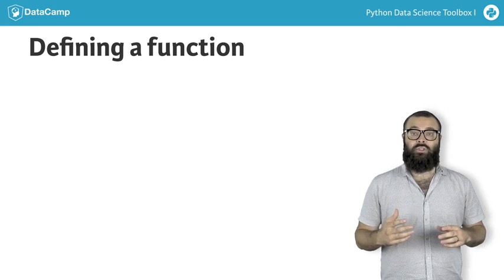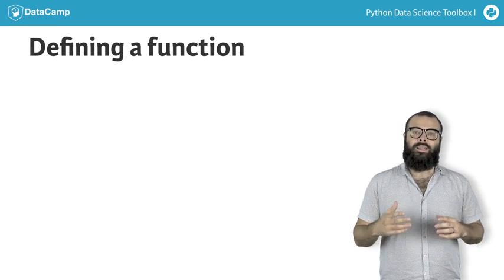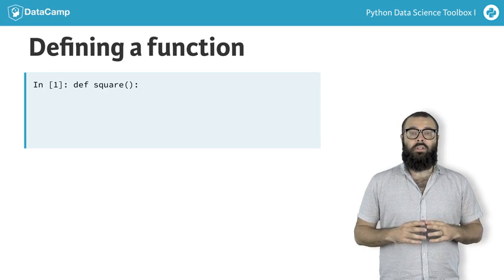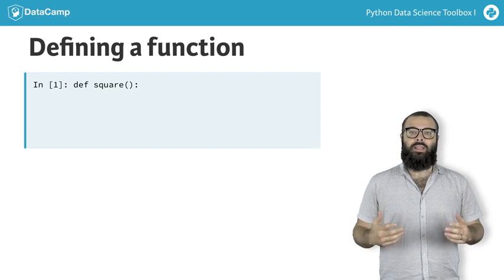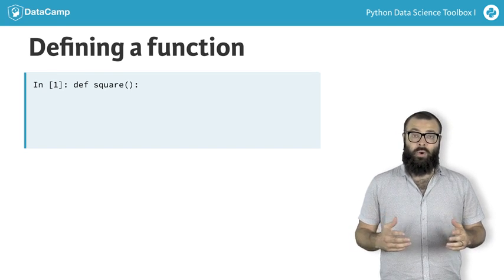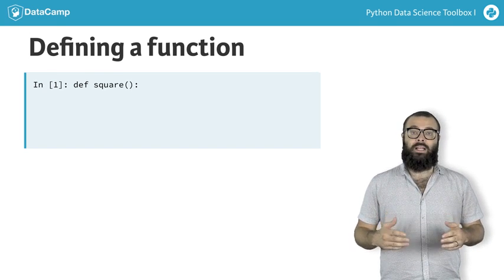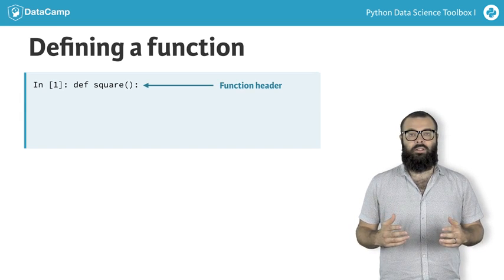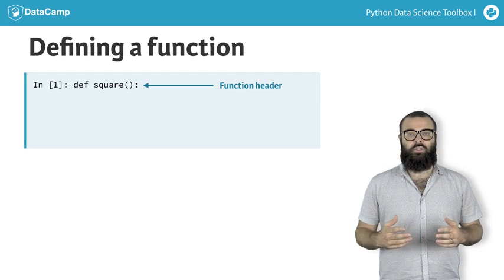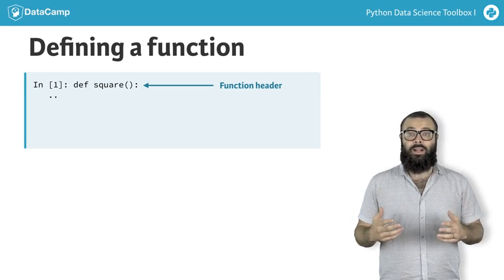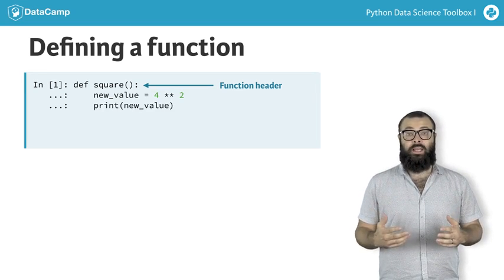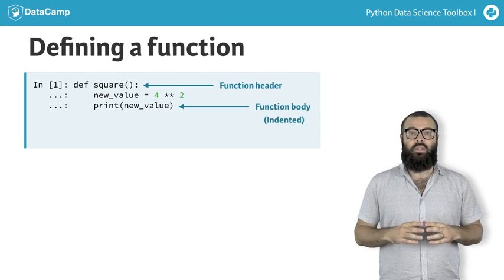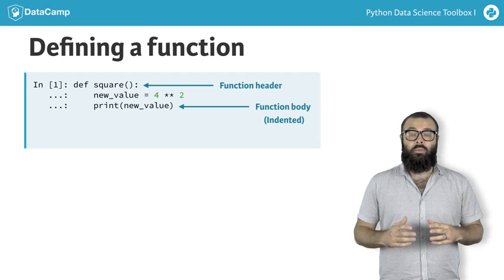We'll now see how to define functions via an example, a function that squares a number. The function name square will be perfect for this. To define the function, we begin with the keyword def, followed by the function name square. This is then followed by a set of parentheses and a colon. This piece of code is called a function header. To complete the function definition, let's write the function body by squaring a value, say 4, and printing the output. Right now, our square function does not have any parameters within the parentheses. We will add them later.